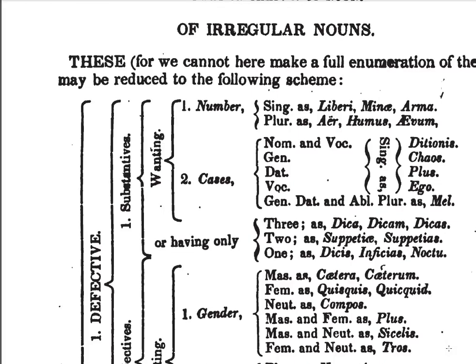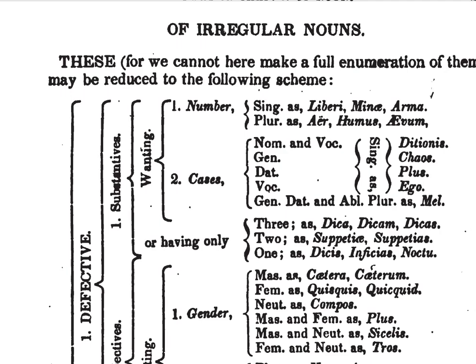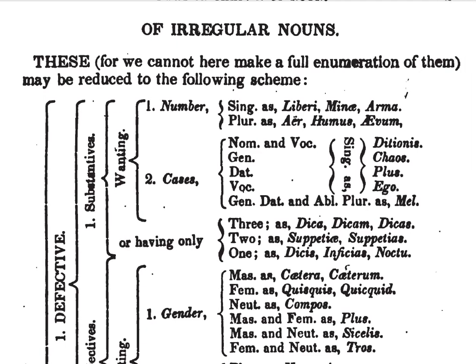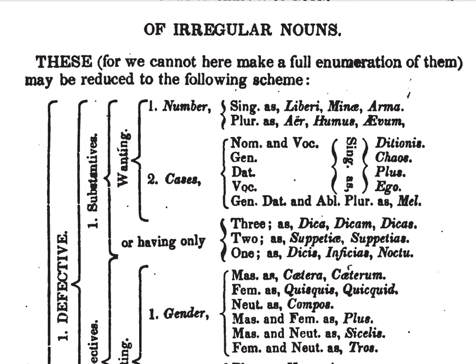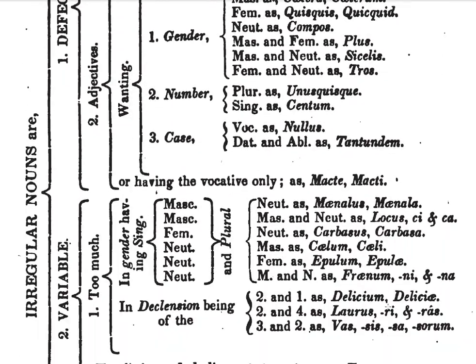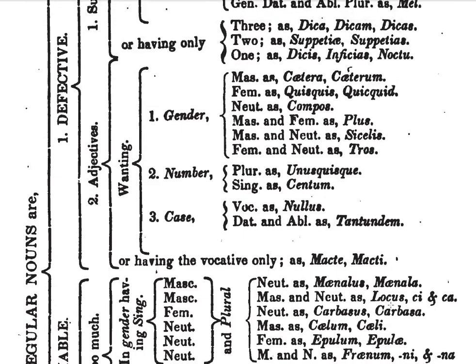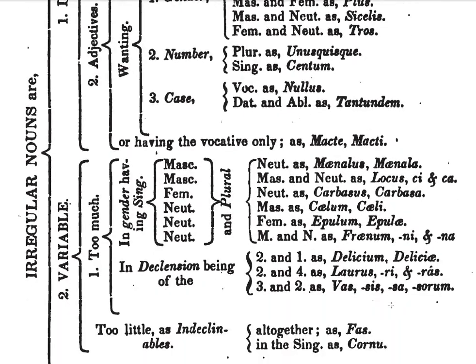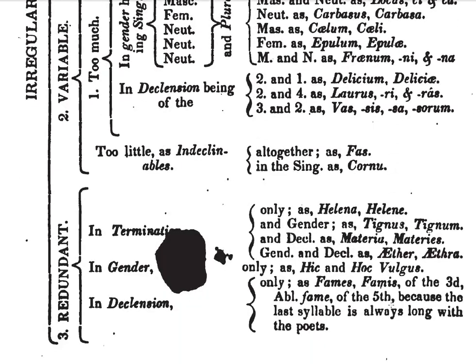Rudiments of irregular nouns. These, for we cannot here make a full enumeration of them, may be reduced to the following scheme. So we have here irregular nouns: one, defective; two, variable; and three, redundant.